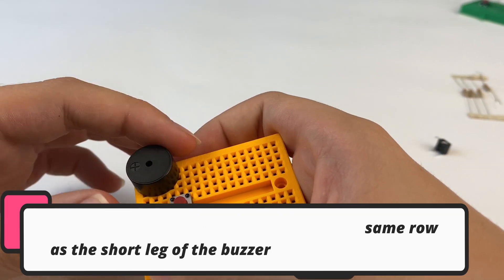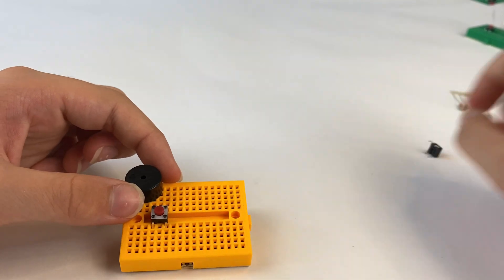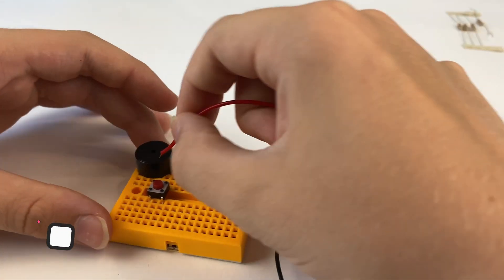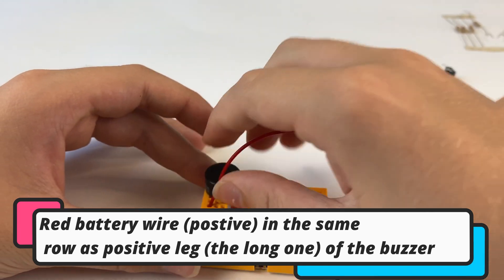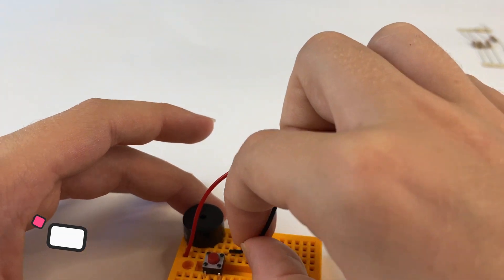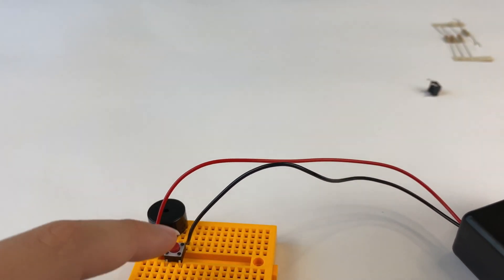Then we can get our battery pack and put one wire there, and the other wire there. Turn it on.